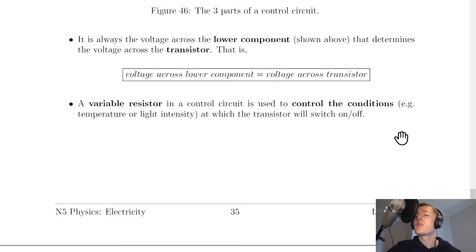Another simple control circuit to think about that responds to light conditions would be street lamps. For example, at night time when the light level outside drops below a certain value, then the street lamps will start turning on, and then in the morning when it becomes brighter and the light level increases above a certain value, then the street lamps will turn off.